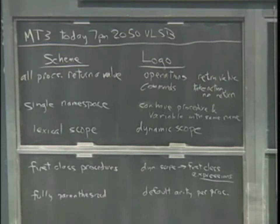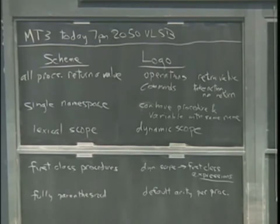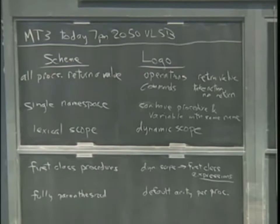Scheme has a single namespace — any symbol is only ever the name of one thing. That has to do with the fact that everything in Scheme is first class, so anything, including a procedure in particular, could be the value of a variable. Logo, like earlier Lisp dialects and also like Common Lisp — the industrial-strength Lisp people use in the real world — has two namespaces: one for procedures and one for everything else.